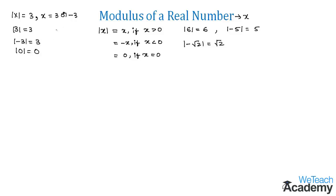Now consider a negative number for mod x. If mod x equals minus four, there is no solution, since the absolute value is never negative. If mod x equals zero, then x equals zero, since mod zero is zero.